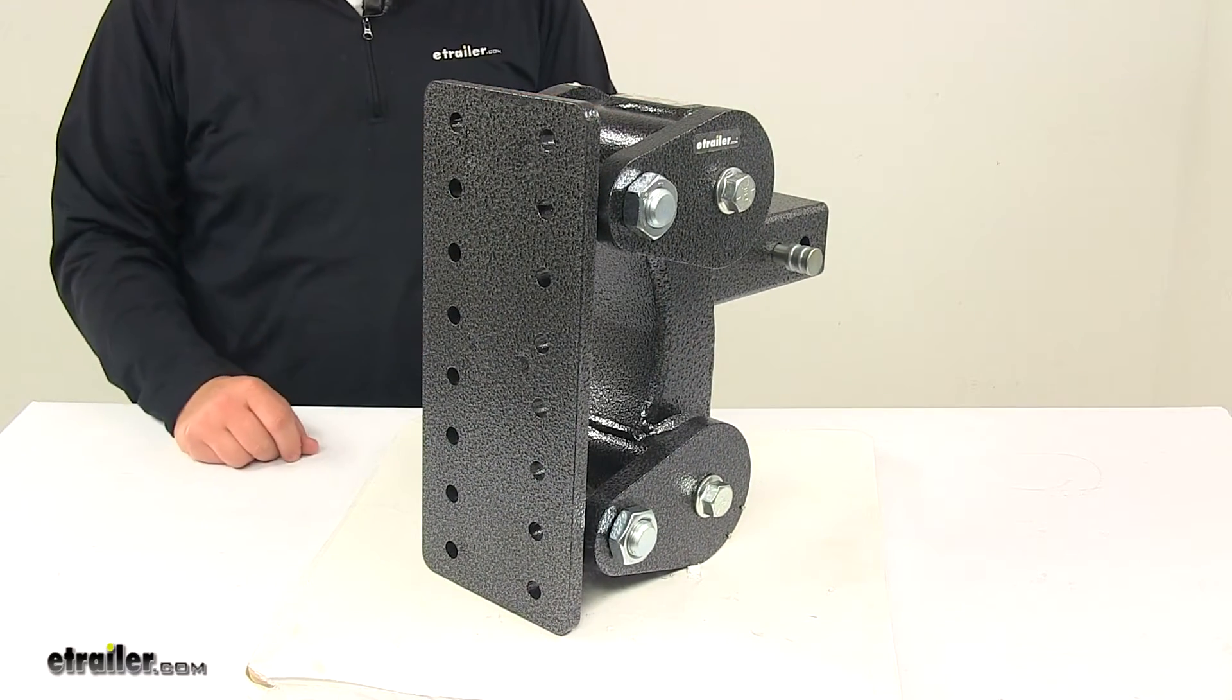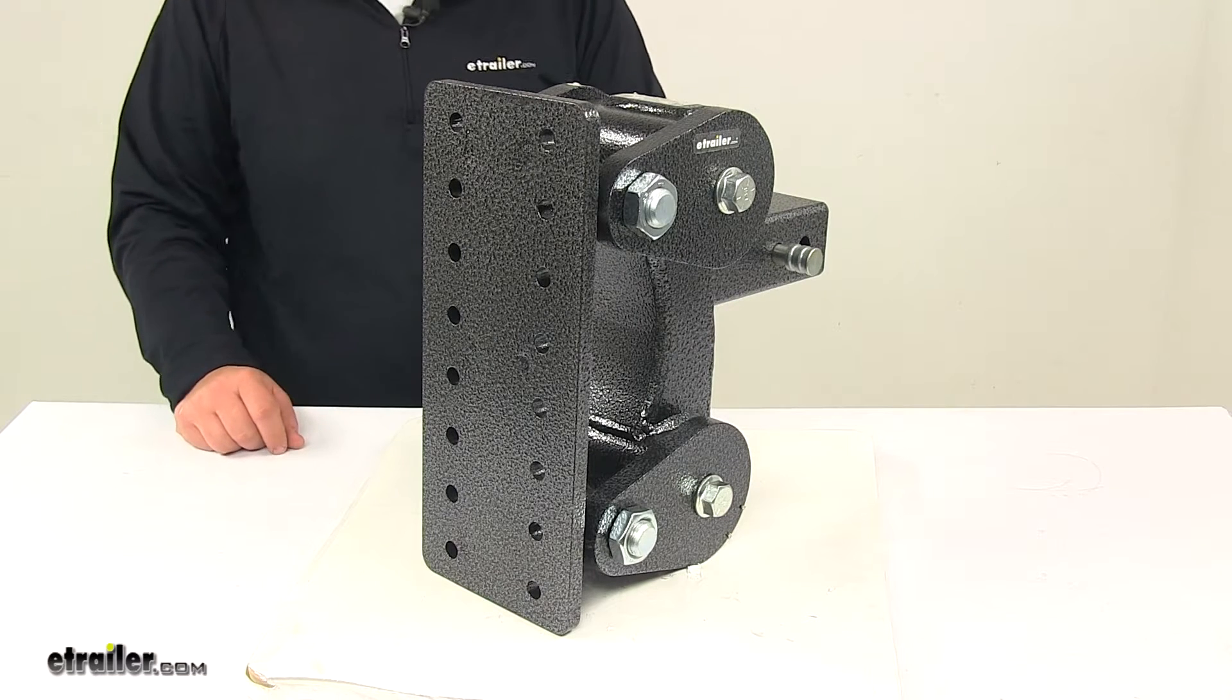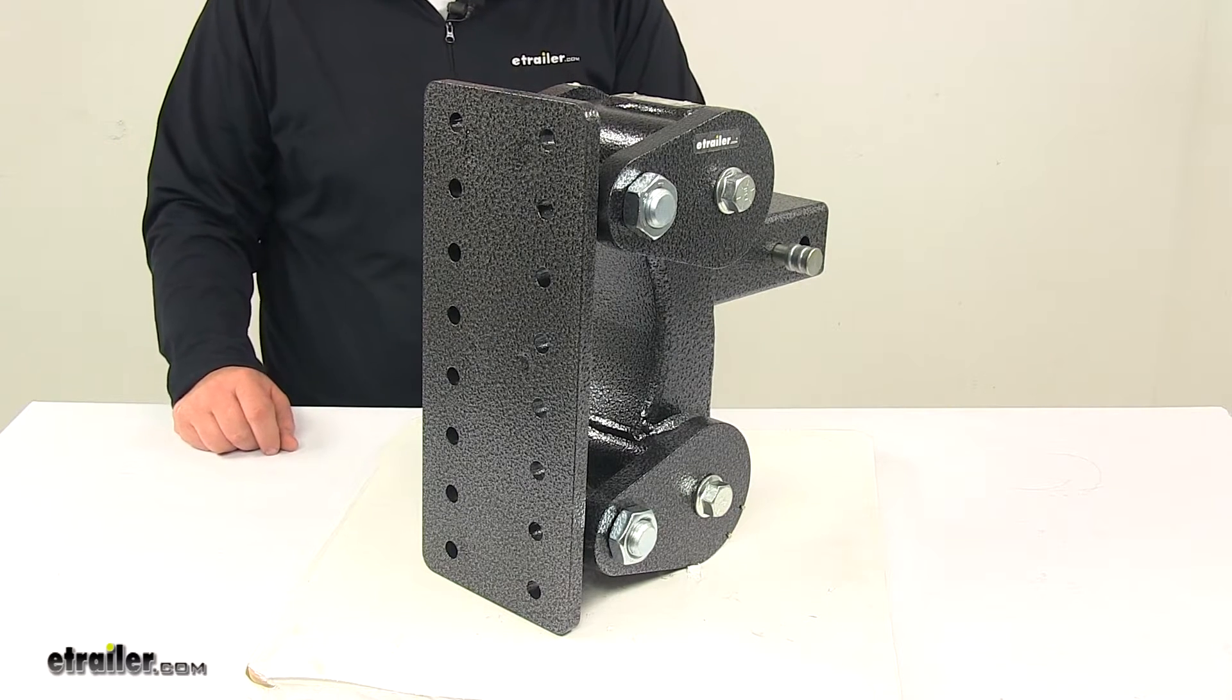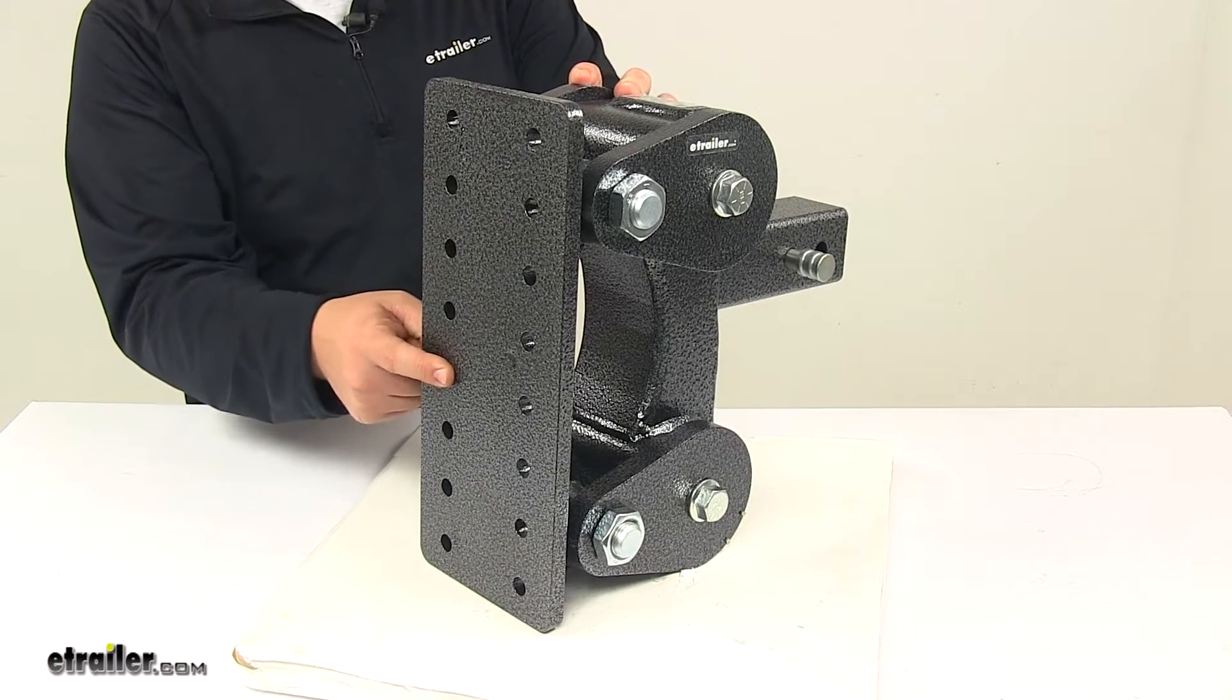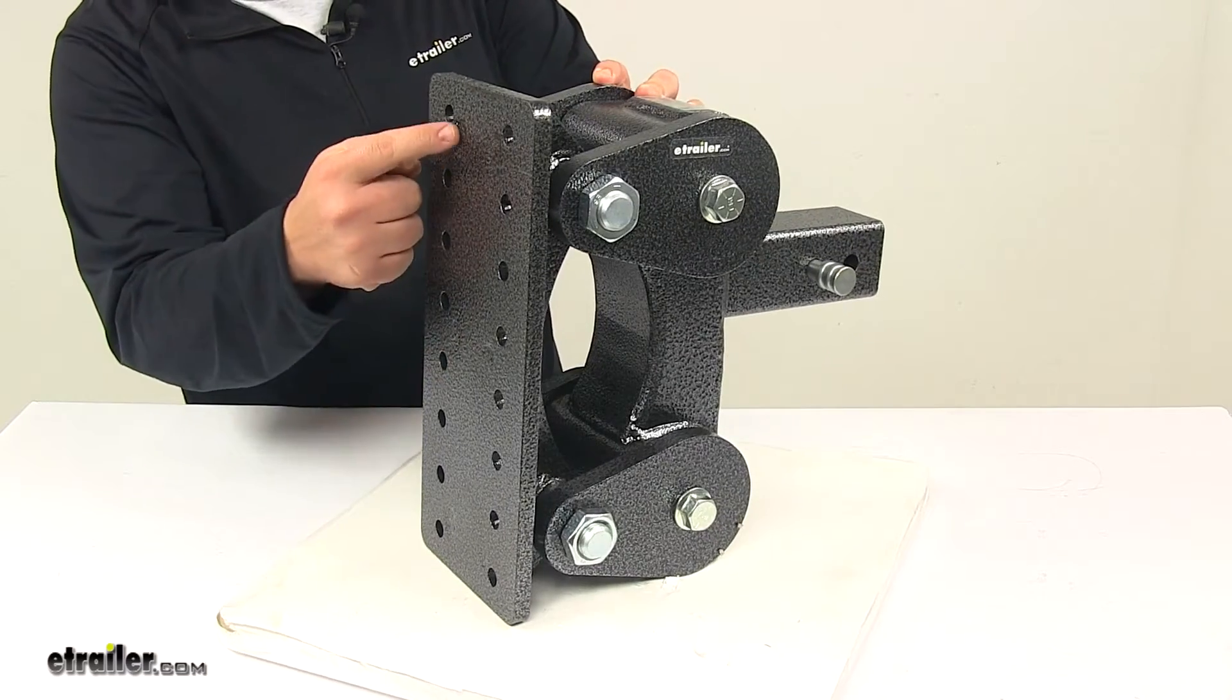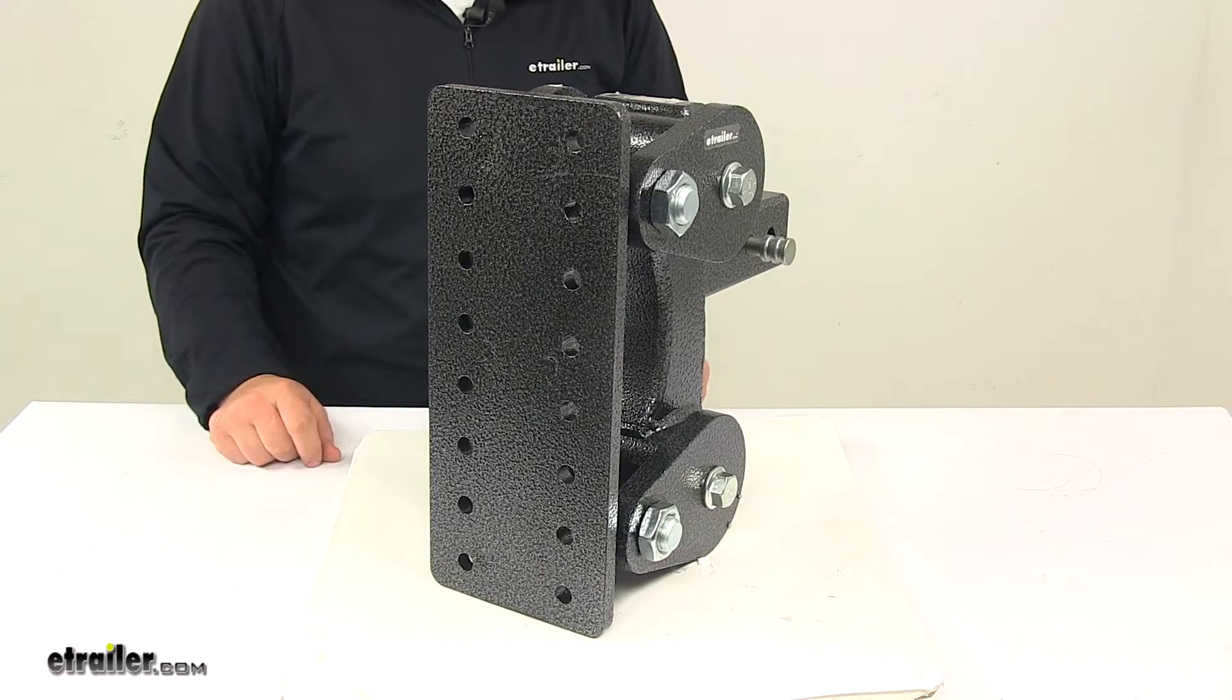So this Pintle Plate Torsion Drop Hitch is compatible with most four-hole pattern bolt-on Pintle Hook Mounts out there on the market. These mount holes are separated apart from one another on center up and down by 1¾ inches and then side to side on center by 3⅜ inches. Hardware is not included.